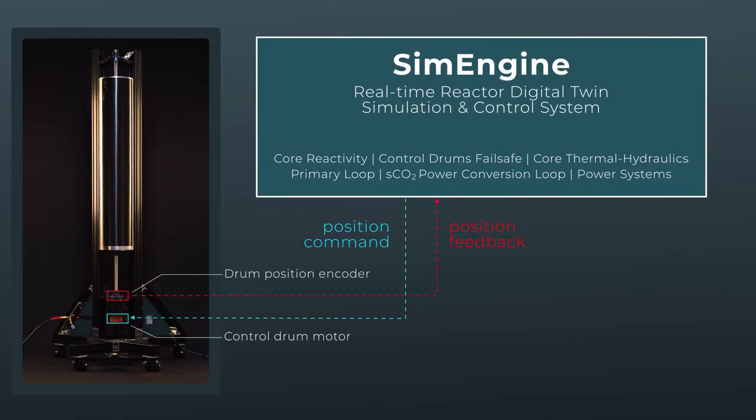Position commands are sent to the drum, while its real position is encoded and fed back into the system. Any mismatch between the physical and simulated system is used to improve modeling fidelity, allowing for rapid risk buy-down.